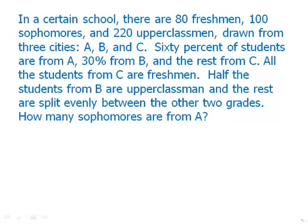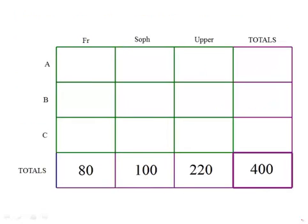So for this, we need an enormous double matrix table. And here I've written in the totals for freshmen, sophomore, and upperclassmen. And I just went ahead and summed across that bottom row to get 400. So that's the total number of people at the school.